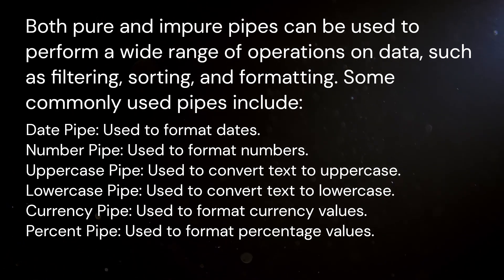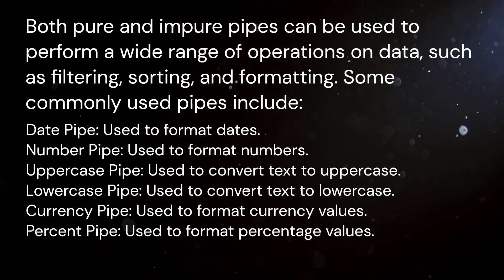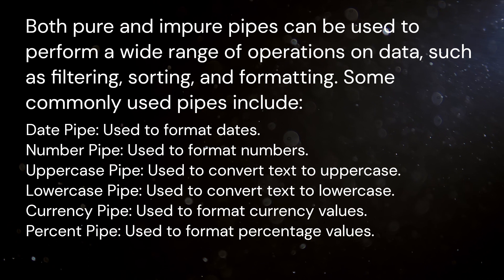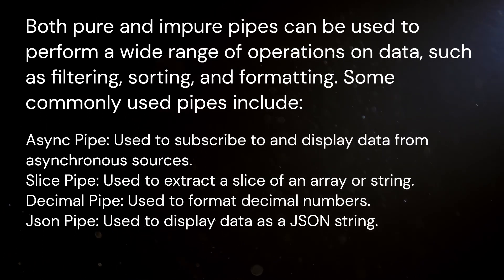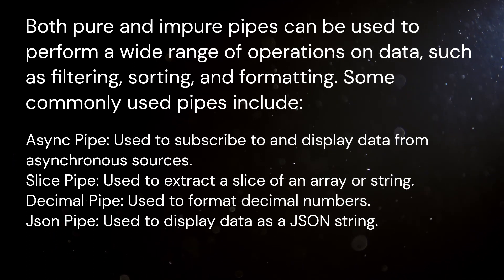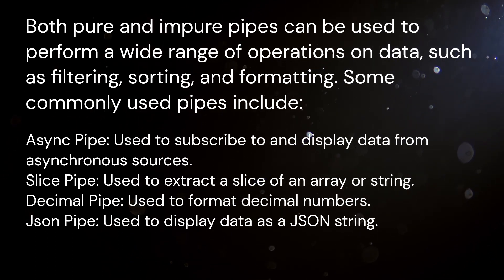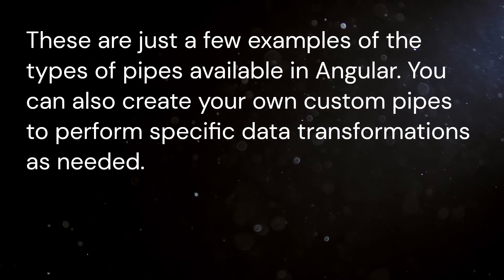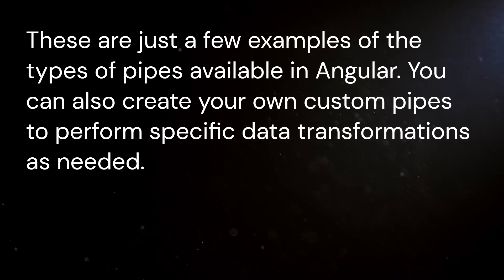Some commonly used pipes include: Date pipe, used to format dates; Number pipe, used to format numbers; Uppercase pipe, used to convert text to uppercase; Lowercase pipe, used to convert text to lowercase; Currency pipe, used to format currency values; Percent pipe, used to format percentage values; Async pipe, used to subscribe to and display data from asynchronous sources; Slice pipe, used to extract a slice of an array or string; Decimal pipe, used to format decimal numbers; and JSON pipe, used to display data as a JSON string. You can also create your own custom pipes to perform specific data transformations as needed.